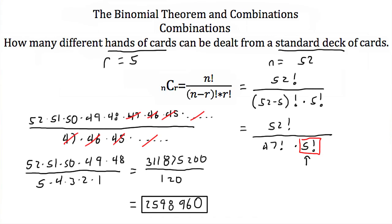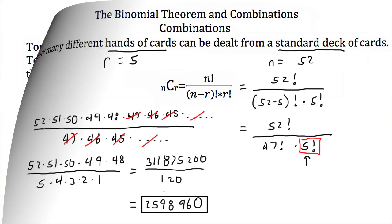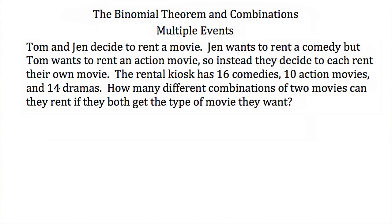That means there are 2,598,960 different possible combinations of five cards that can be dealt out of a standard deck of 52. Now, sometimes finding combinations are a little bit more difficult than that — sometimes we have what we call multiple events.